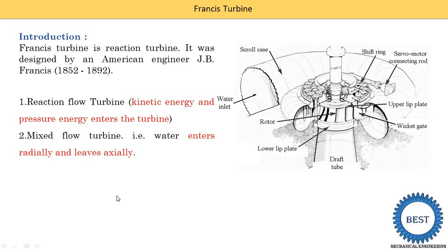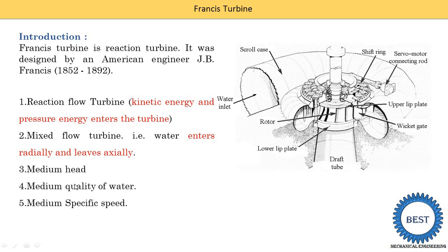Third point: Francis turbine is used for a medium head. Fourth point: it handles a medium quantity of water. Fifth point: it has a medium specific speed. For Francis turbine, four out of five points start with the letter M — mixed flow, medium head, medium quantity, medium specific speed — making it easy to remember for examinations.